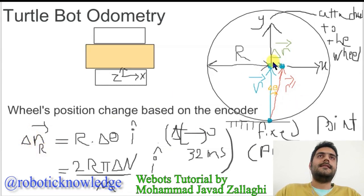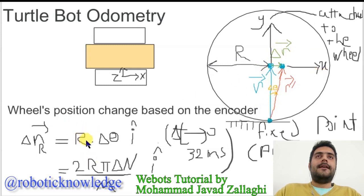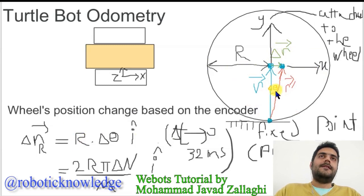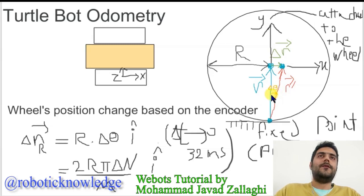And you can see it here with this green vector: it is equal to the radius of the wheel, capital R, times the change in angle of the wheel. We know from the kinematics of the wheel for the pure rotation constraint that this angle is around this contact point.